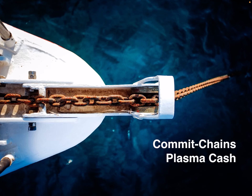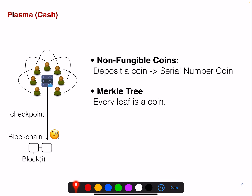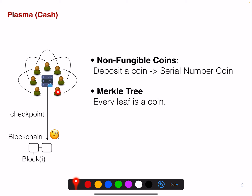One famous implementation of CommitChains is PlasmaCash. In PlasmaCash you have a centralized operator and a set of users, and this operator commits a checkpoint to the underlying blockchain. This checkpoint is a Merkle tree and every leaf is a coin.